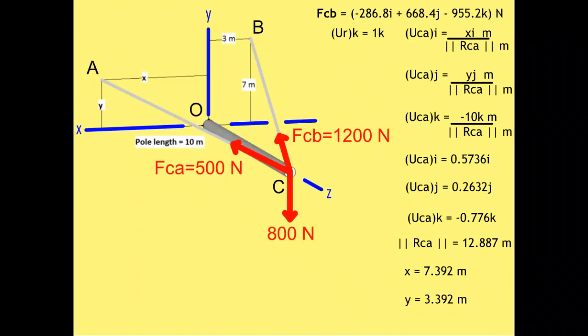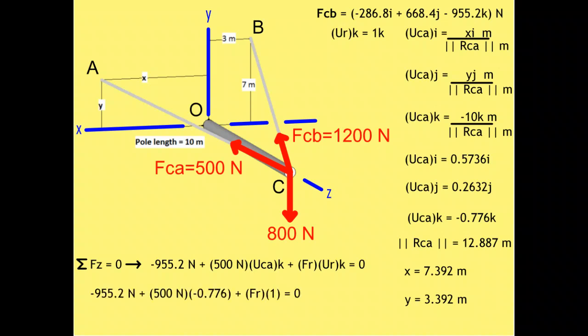Last but not least, we can solve for the resultant force. This can be solved from the equation containing the sum of the forces in the z direction. Substituting in known values, we find that the resultant force is equal to 1,343.2 newtons.